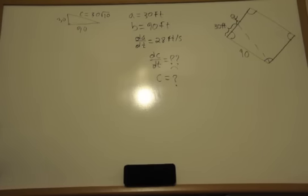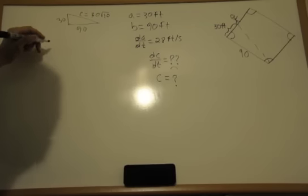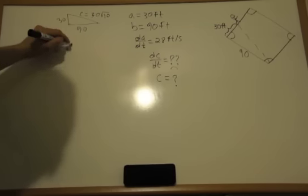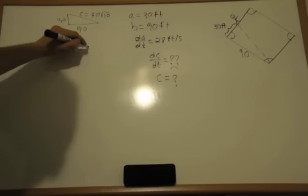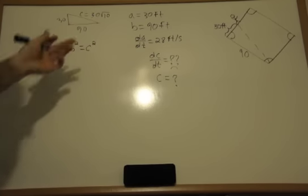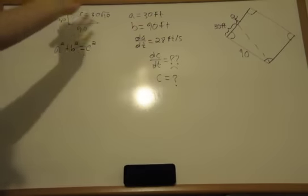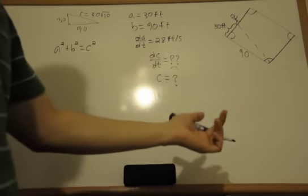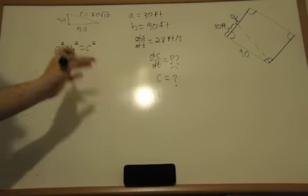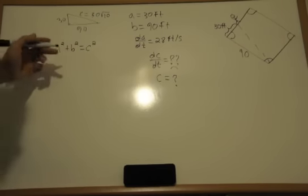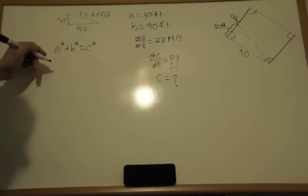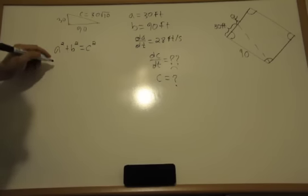Okay, so now we have the Pythagorean Theorem. So we have this whole thing modeled. We know what all the sides are. Okay, now how quickly is this quantity changing, is what we want.